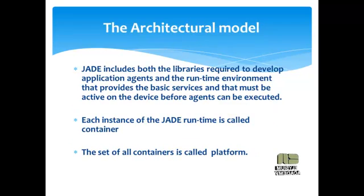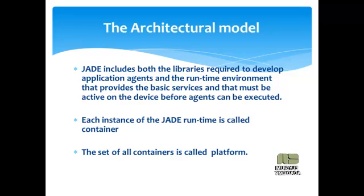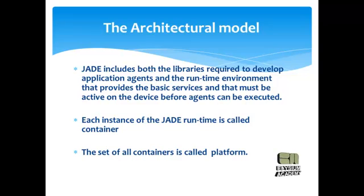The architectural model: JADE includes both the library required to develop application agents and the runtime environment that provides the basic services, which must be active on a device before agents can be executed. Each instance of the JADE runtime is called a container. The set of containers is called a platform, and it provides a homogeneous layer that hides from agents the complexity and diversity of the underlying tiers — like hardware, operating system, types of network, and Java Virtual Machine.